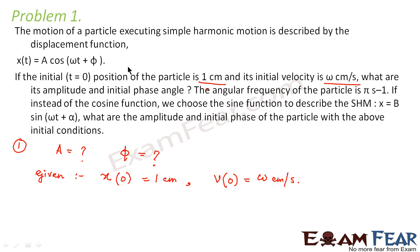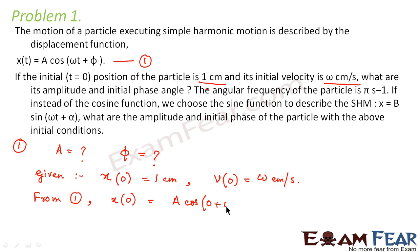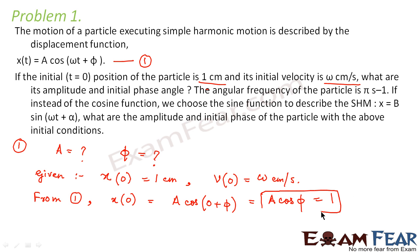Now with the help of this displacement function, let us calculate the value of x at t = 0. From equation 1, x at t = 0 is equal to A cos(0 + φ), which equals A cosφ. According to the question, x at t = 0 is 1 cm, so A cosφ = 1. We number this as equation 2.